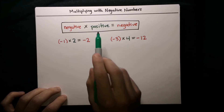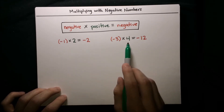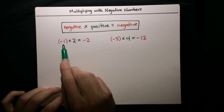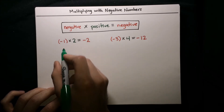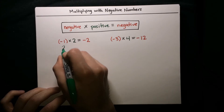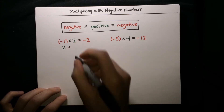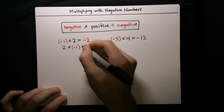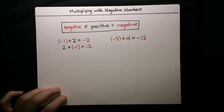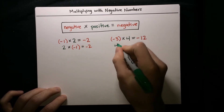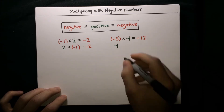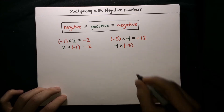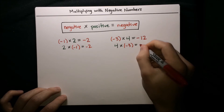Those are two examples of this general rule. One thing to notice is that because multiplication is commutative, we can switch around the two numbers. So instead of negative 1 times 2, we could write 2 times negative 1 and get the same result: negative 2. Likewise, instead of negative 3 times 4, we could write 4 times negative 3 and still get negative 12.